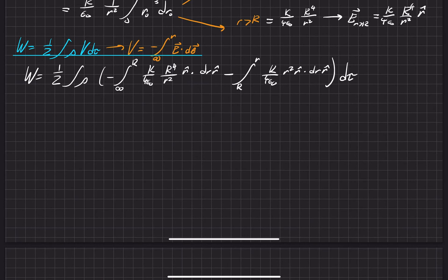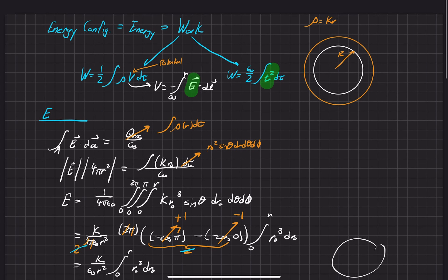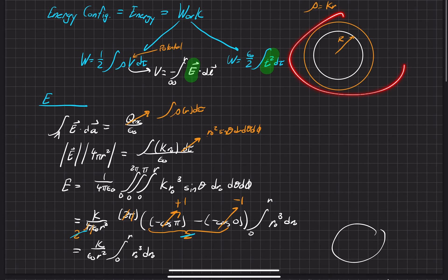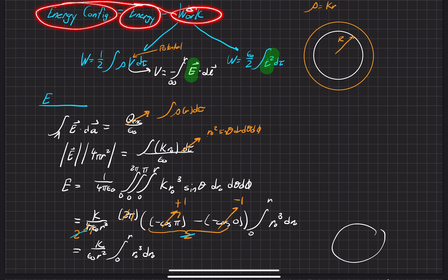In this section of the problem, we're going to find the work that was put into creating this charge distribution. From that work, we can find the energy that's stored in it — also known as the energy configuration — which is the whole point of the problem.